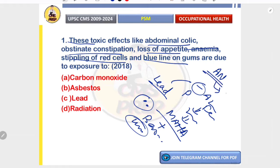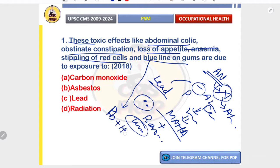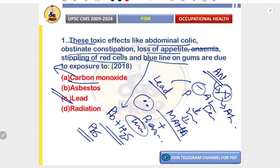Lead also causes damage to the autonomic nervous system supplying the GIT, leading to obstinate constipation — constipation not relieved after a long time — and abdominal colic. The blue line on the gum is caused by lead's reaction with hydrogen sulfide; lead sulfide deposition at the gingival margin produces the blue line. Correct answer is C.